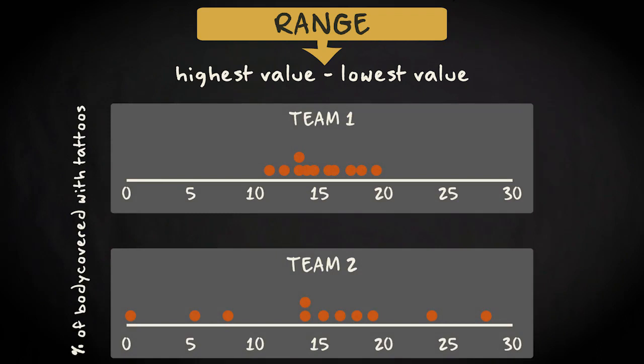The player in team 1 with the largest tattoo density has covered 19.3% of his body with tattoos. The player with the smallest tattoo density has covered 10.8% of his body. The range is 19.3 minus 10.8 equals 8.5.